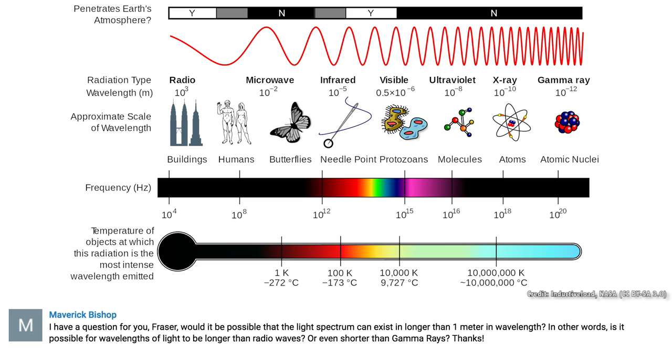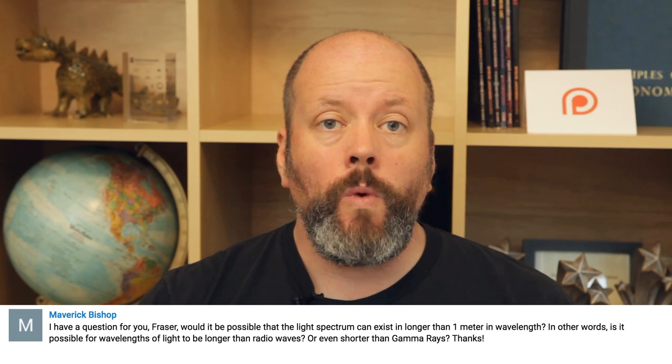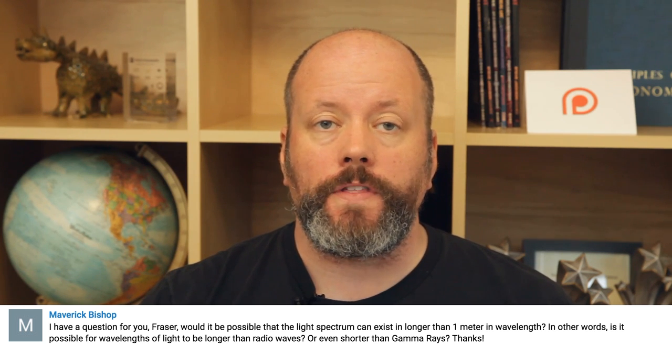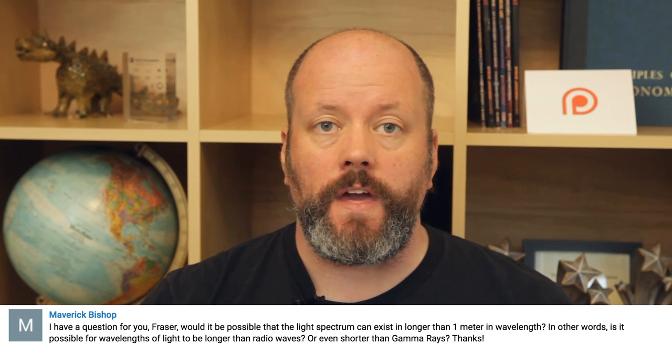Maverick Bishop asks: can wavelengths of light exist longer than one meter, or shorter than gamma rays? Radio waves and gamma rays are the same thing — they are all part of the electromagnetic spectrum. It's all about the size of the wavelength. If you have very long waves, that's in the radio spectrum. If you have very short waves, that's in the gamma ray spectrum.